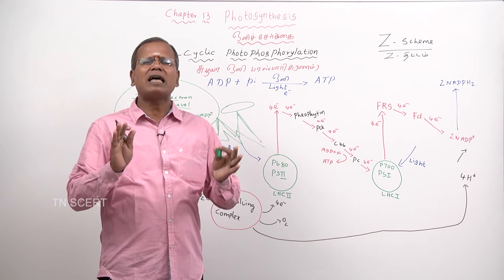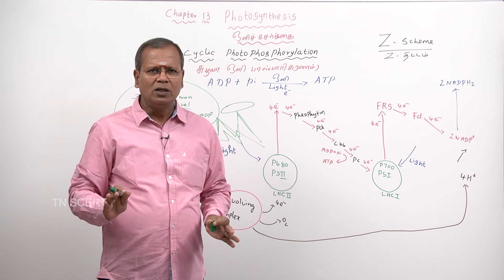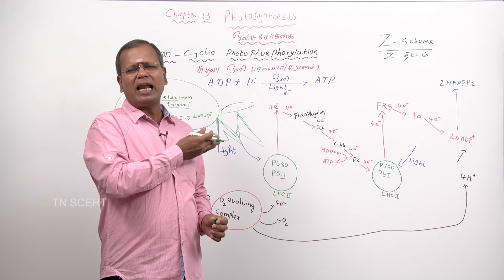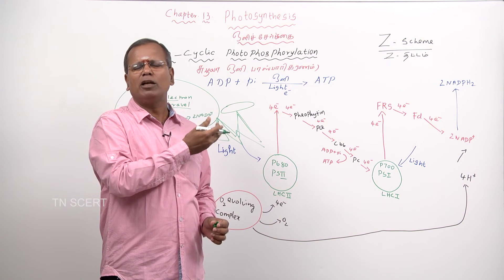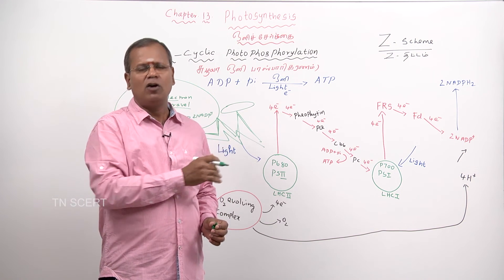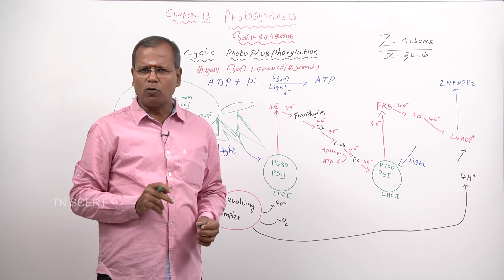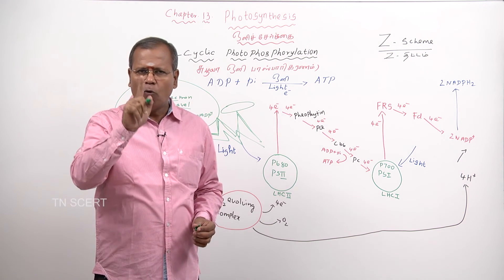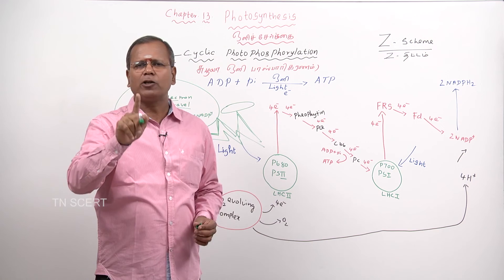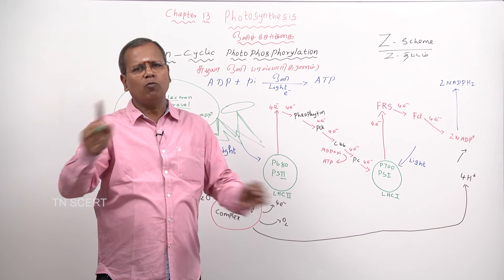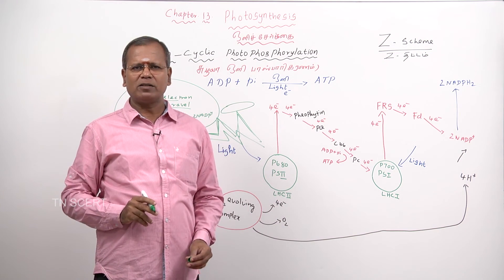What is the result of non-cyclic photophosphorylation? One ATP and two NADPH2 molecules are formed. Thank you very much.